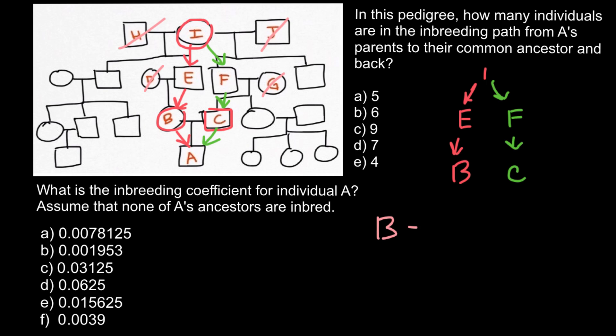We also can write the same pathway in line form, so we're going to get B, E, I, F, and C. And we underline I in order to show that this is going to be the common ancestor. This is going to be two shoulders or two arms.